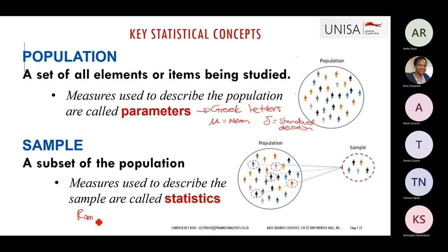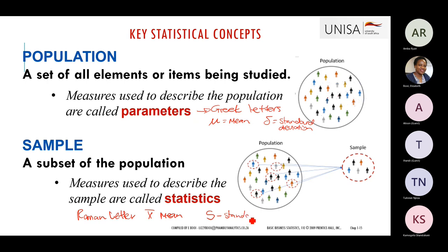For sample statistics, we use Roman letters — standard letters you and I understand. For example, the sample mean is X-bar (X̄) and the sample standard deviation is S. So for population parameters, because the population is big, we use Greek letters like mu (μ) and sigma (σ). For sample statistics, we use simple letters we can pronounce like X-bar and S.